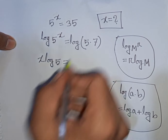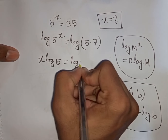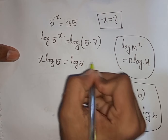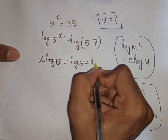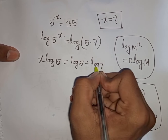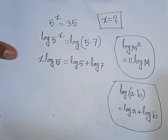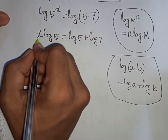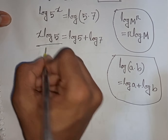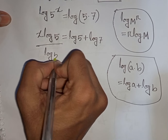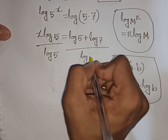So we can write x log 5 is equal to log 5 plus log 7. Now we need the value of x, so we divide both sides by log 5.